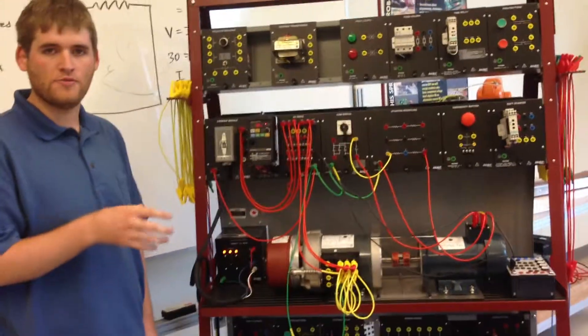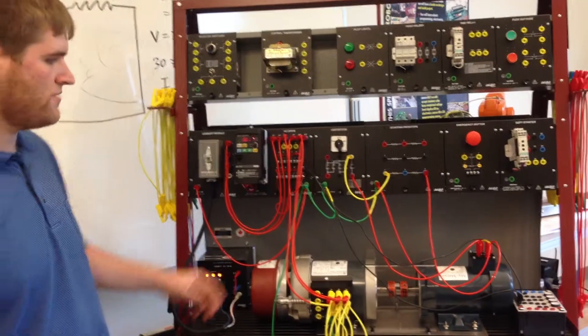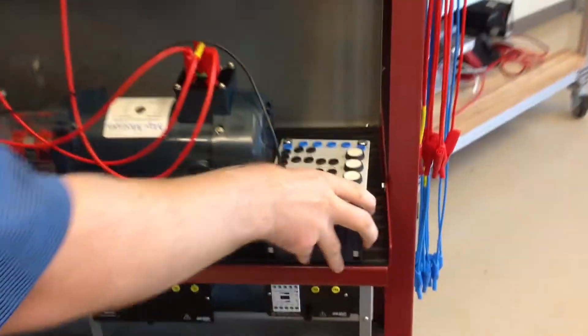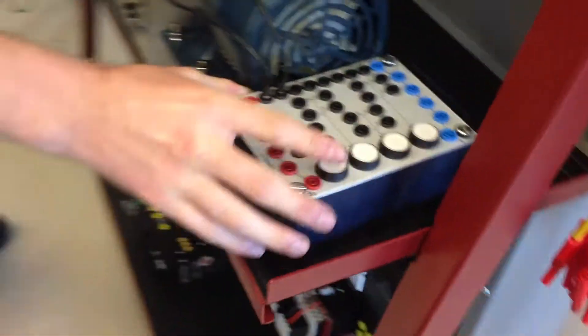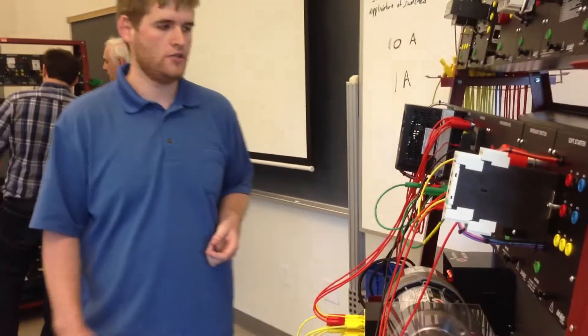So I already have all my parameters set. There's about five of them that you can play with, but the way I have this set up is we have a DC motor for a load on our AC motor, and I also have a light here. It's going to be this bottom light, and this light will light up when I hit my overload condition.